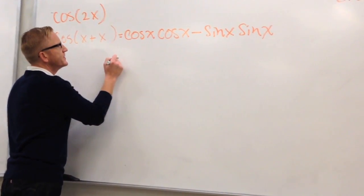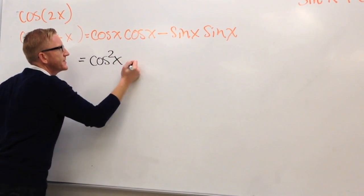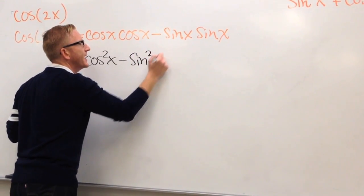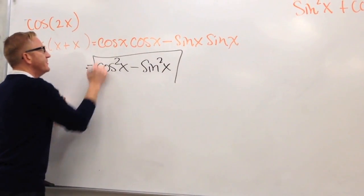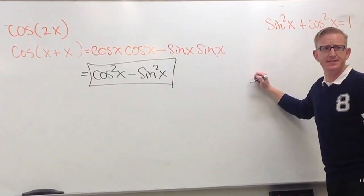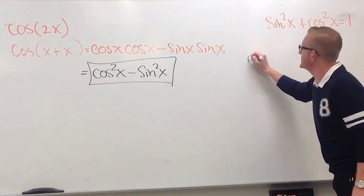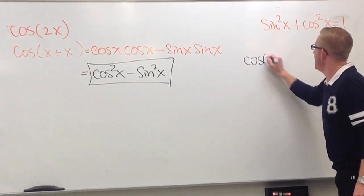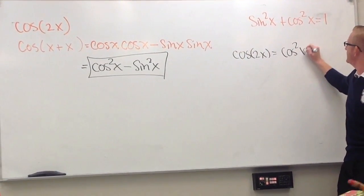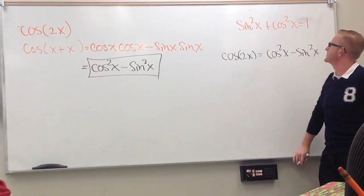Cosine x times cosine x — that's cosine squared x — minus the sine squared x. So you have your first double angle identity for cosine: the cosine of 2x can be written as cosine squared x minus sine squared x.